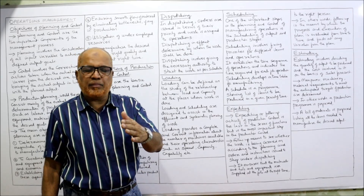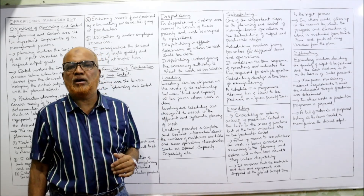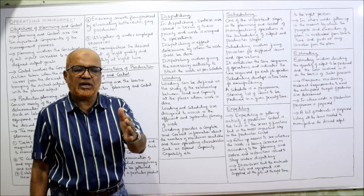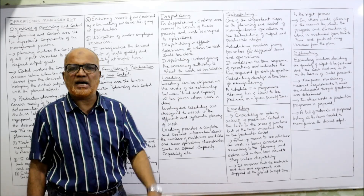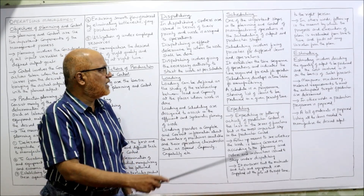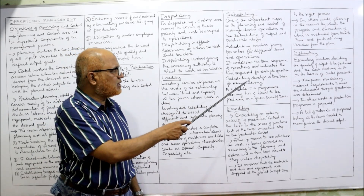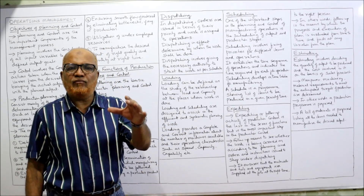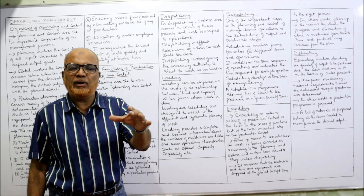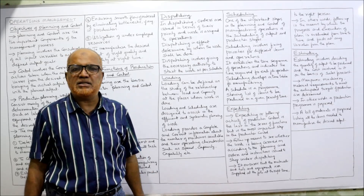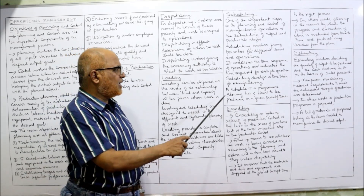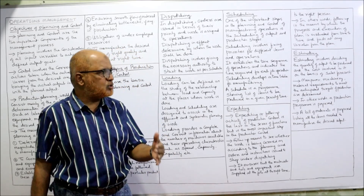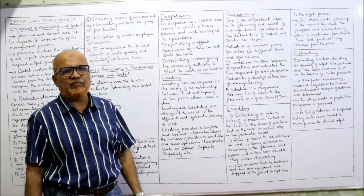In scheduling, predecessor and succession rules have to be followed — which activity to be done first and which activity next. Scheduling develops a timetable of manufacturing, indicating by what time the output can be completed. A schedule is a program showing a list of items to be produced in a given time frame.